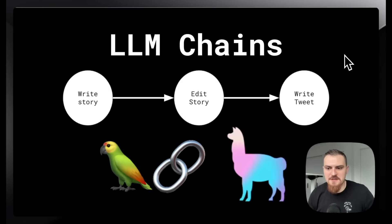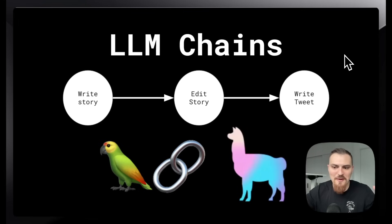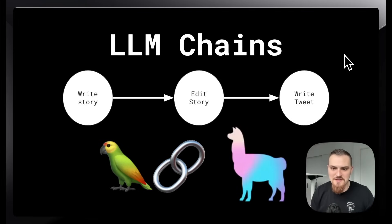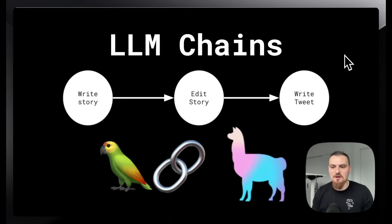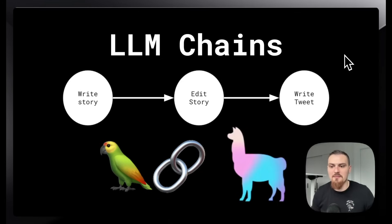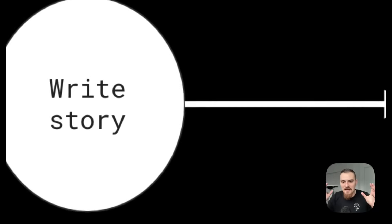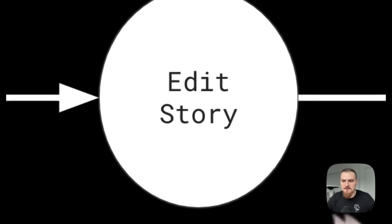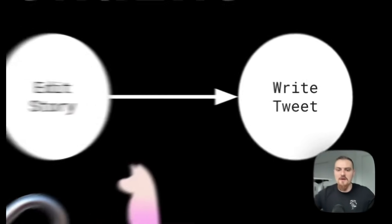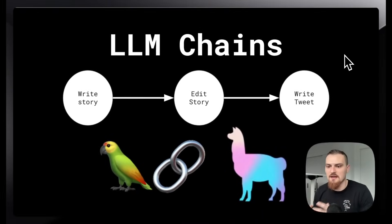Shortly after ChatGPT came out and blew everyone's minds with its ability to speak fluently, answer questions, write a rap song, or just hold a conversation, people realized that you could take these large language models even further by connecting them with themselves in a way — in large language model chains. This has been super evangelized by the work of LangChain and LlamaIndex and definitely looks like the future of building applications with large language models.